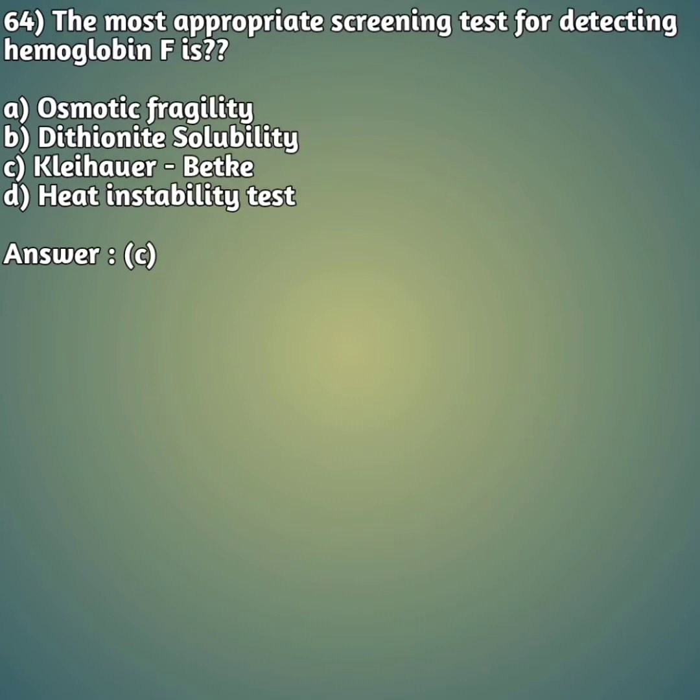The 64th question: the most appropriate screening test for detecting hemoglobin F is - option A: osmotic fragility. Option B: dithionite solubility. Option C: Kleihauer-Betke test. Option D: heat instability test. The right answer is answer C - the Kleihauer-Betke test is the most appropriate screening test for detection of hemoglobin F.